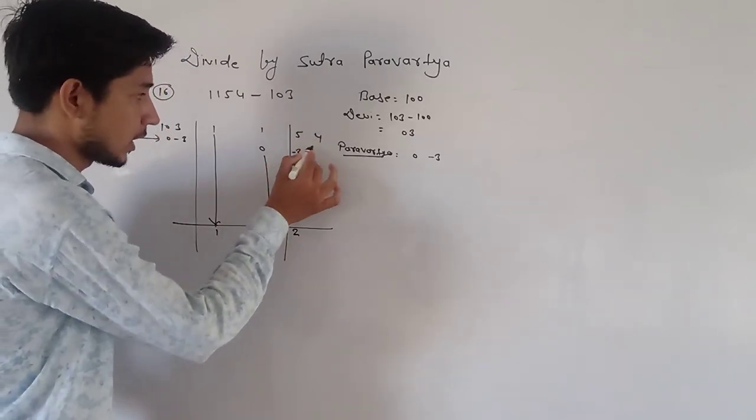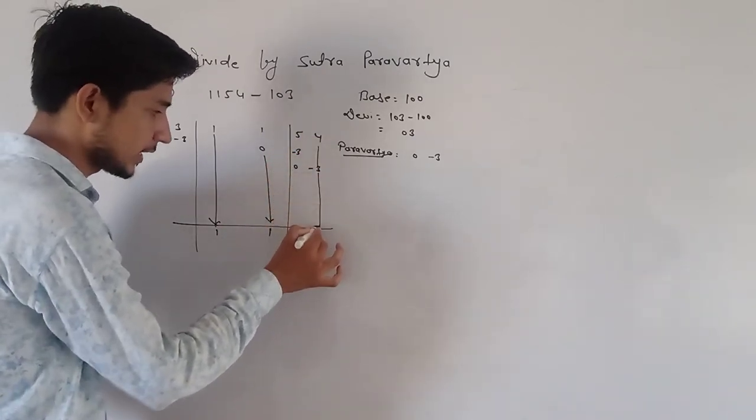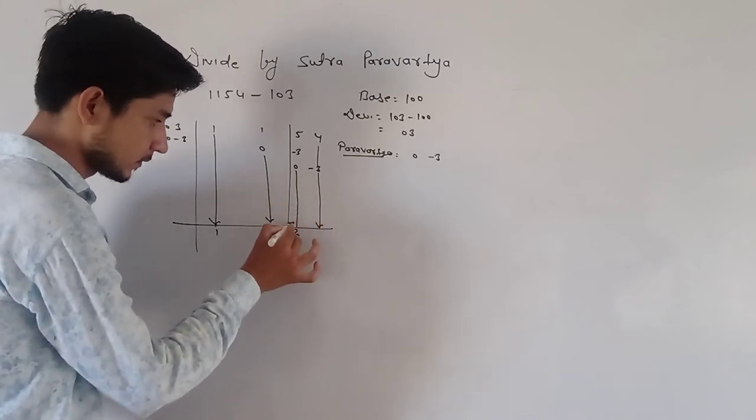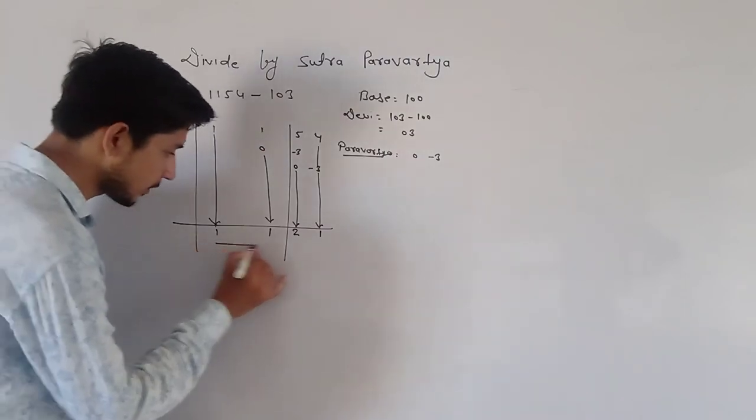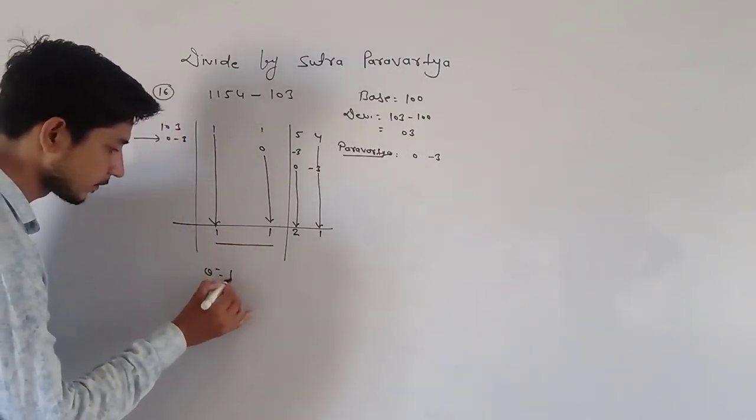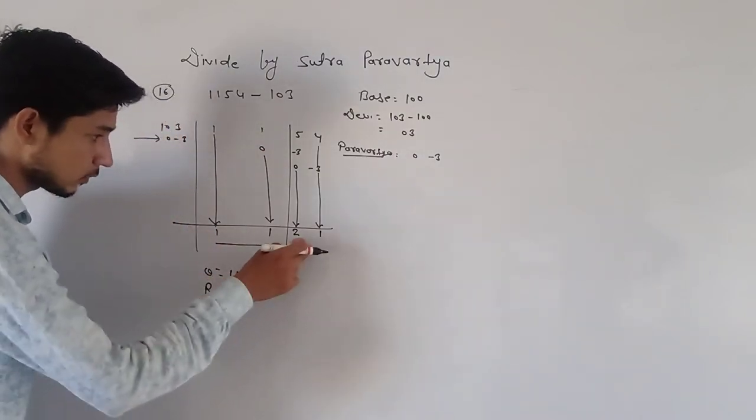4 and minus 3, we will solve row-wise. 4 and minus 3, the answer is 1. This is the quotient part, and this is the remainder part.